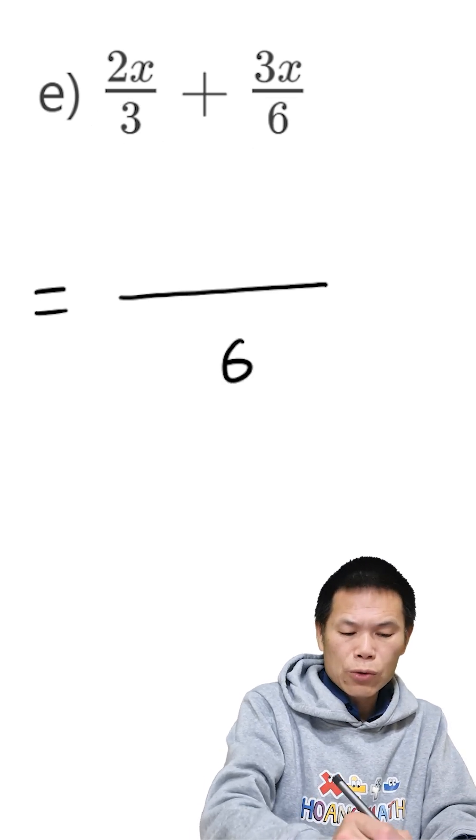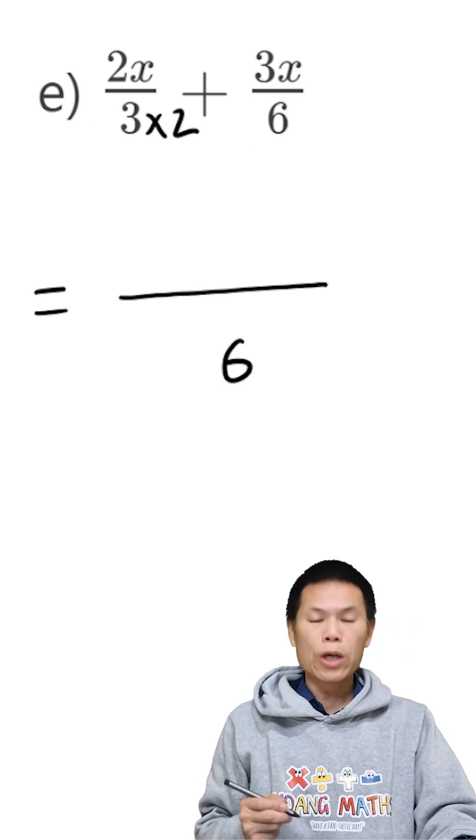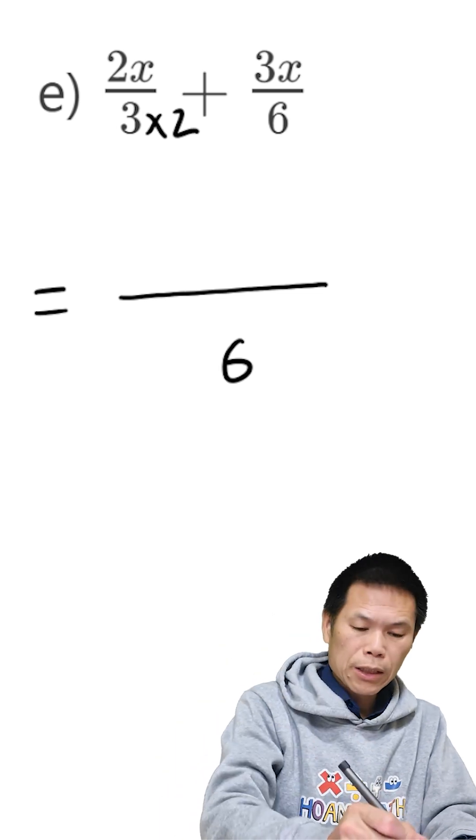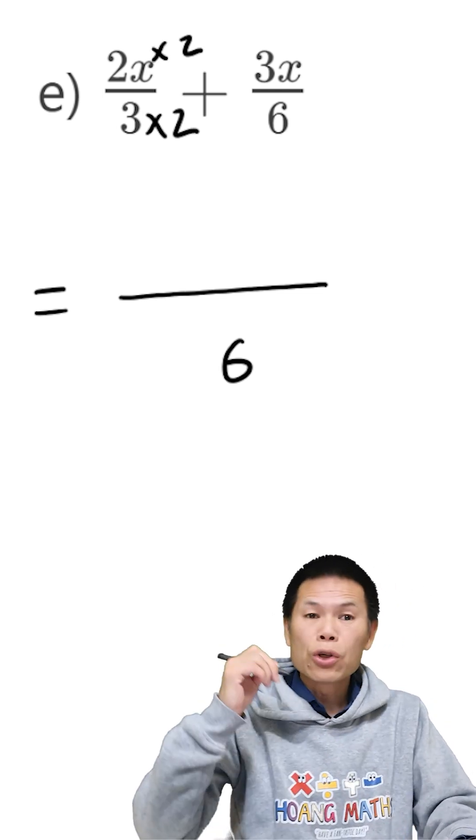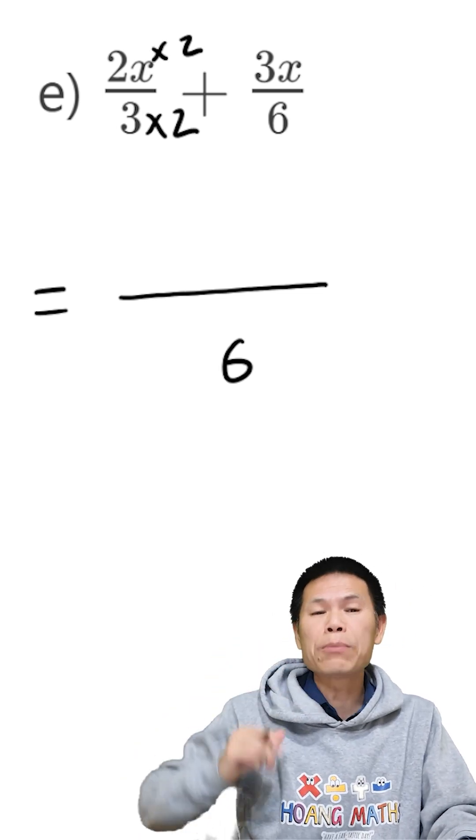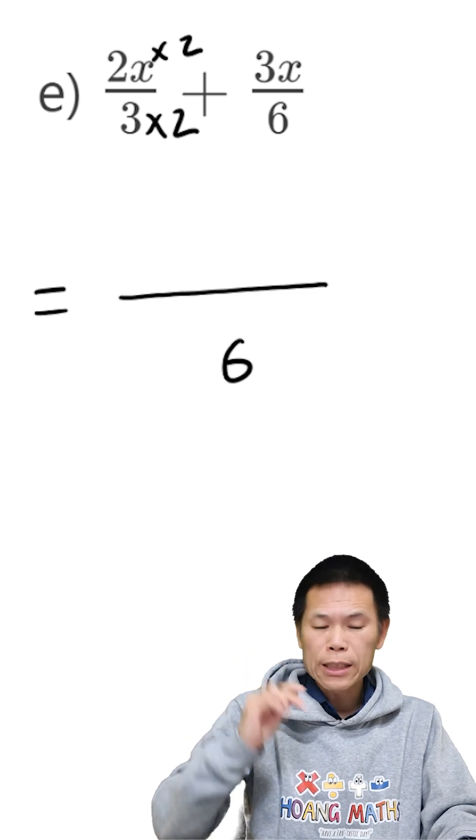So to get from 3 to 6, I times by 2. Therefore, the top must time by 2. So 2x times 2. 2 times 2 is 4. So the answer is 4x.